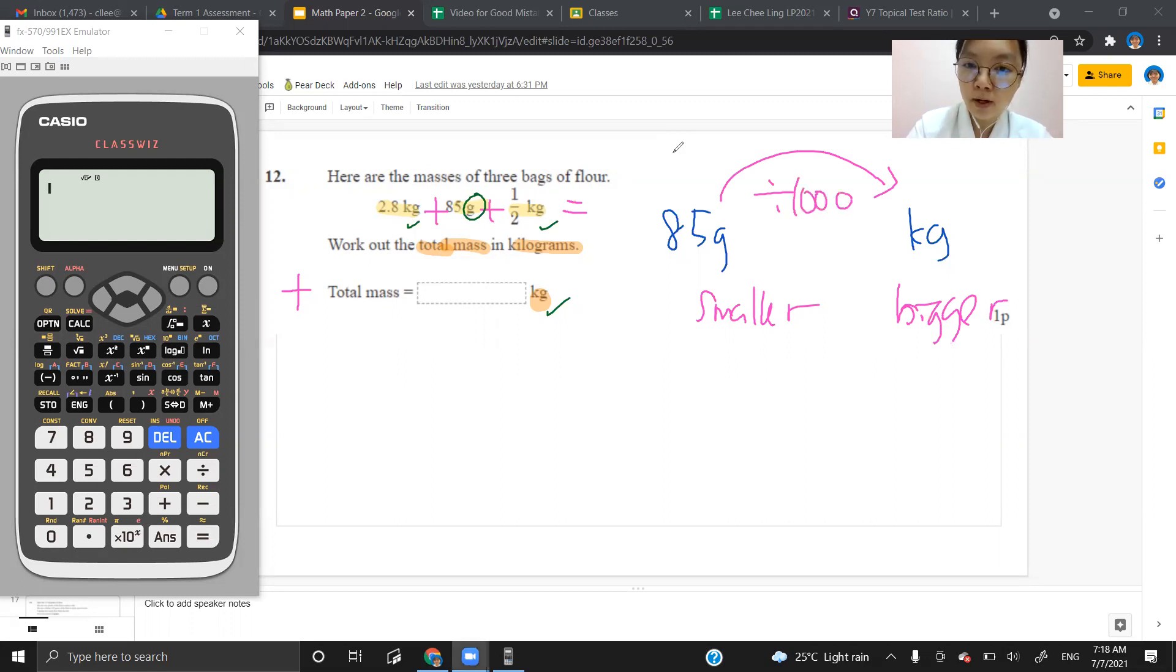85 divided by a thousand. Shifting the dot after the number here. So 1, 2, 3. So it should give me 0.085 kg.